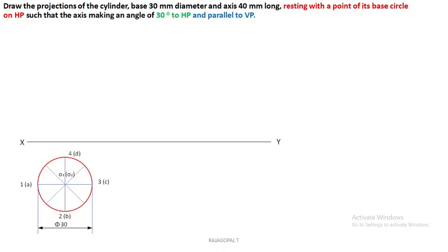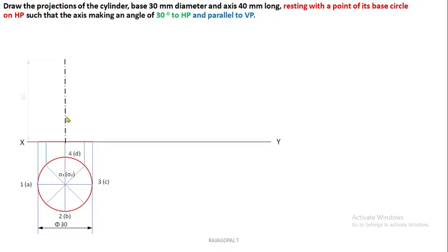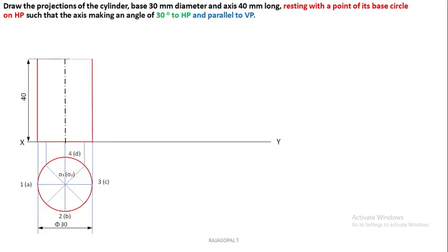Next, extend the projectors from all the respective divisions and then draw the base. After completing the base, the height of the axis is 40 mm. Draw the axis representation using long dash-dotted thin lines — the axis height is 40 mm. Now you can complete the front view by joining all the respective boundaries of the cylinder.